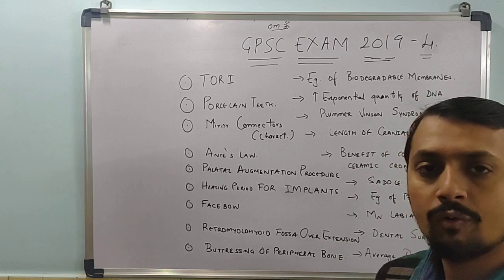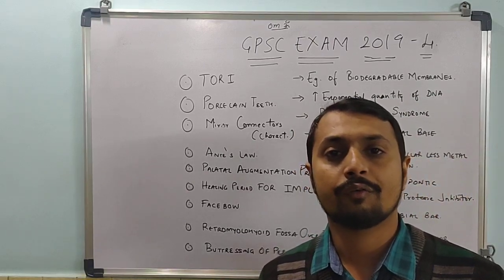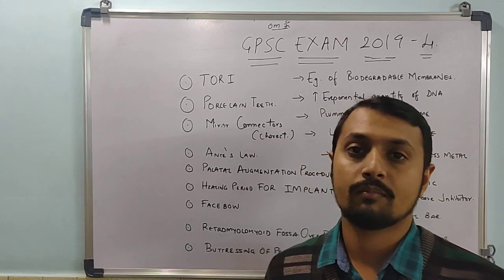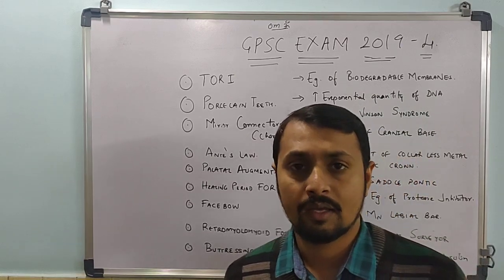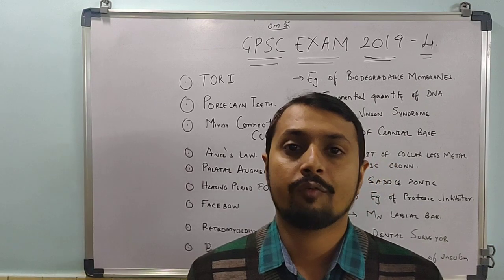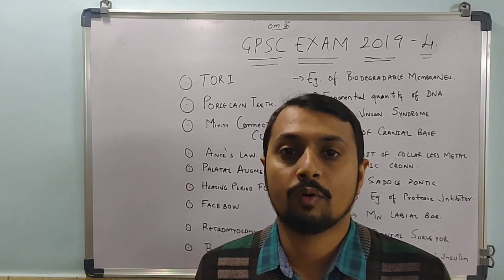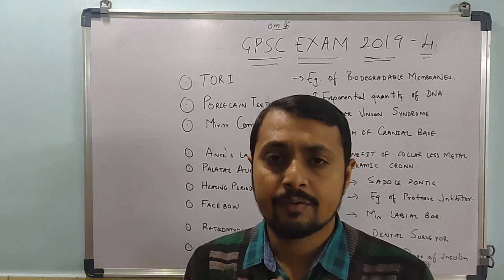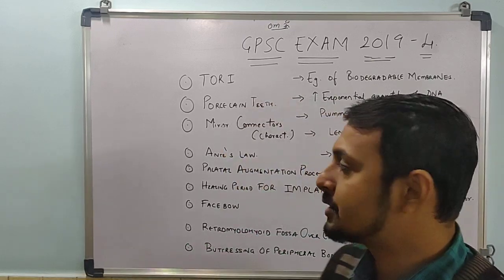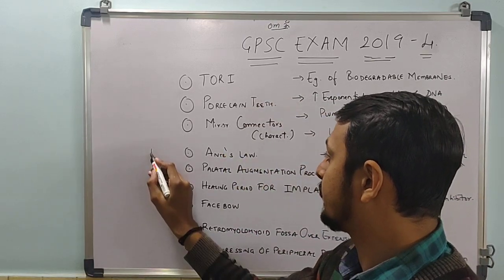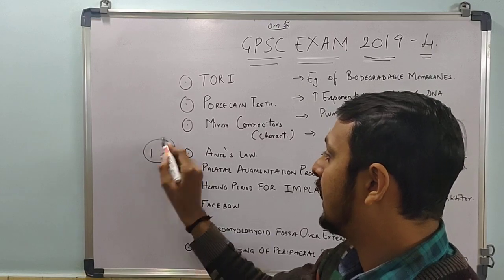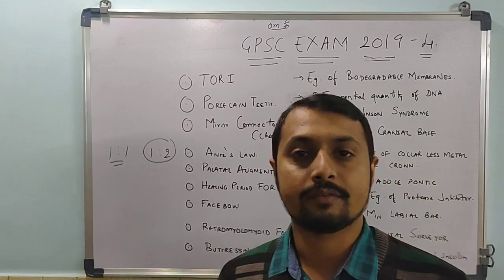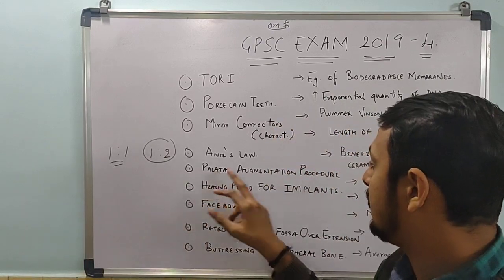Ante's law is for support of the FPD. It was given by Johnston et al. It states that the periodontal area of the abutment teeth should be equal to or more than the tooth or teeth they are going to replace. The recommended ideal ratio is 1:2, though 1:1 also follows Ante's law.